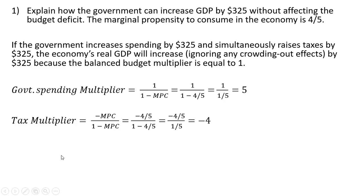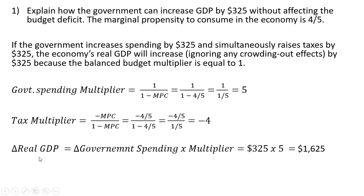Let's look at it in a little bit more detail. The change in real GDP coming about from a change in government spending will be given by this formula: change in government spending times the government spending multiplier. In this problem, government spending increases by $325, and we multiply that by the government spending multiplier. So the effect here is GDP expands by $1,625.